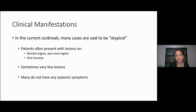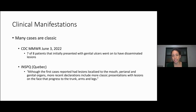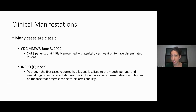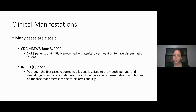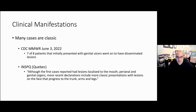We're seeing a lot of lesions on genital organs, perianal region, oral mucosa, sometimes very few lesions — sometimes just one — and many don't have systemic symptoms. Now that we're looking for them more, both the CDC and the INSPQ in Quebec have said they're finding more classic cases. The CDC's report noted eight patients who initially presented with just genital ulcers and then went on to have more disseminated lesions, because this evolves over two weeks. The INSPQ said similarly — first cases picked up in STI clinics with genital and oral lesions — but now several cases with more classic presentations: lesions on the face progressing toward trunk and limbs, or starting as one lesion and becoming more generalized.